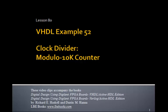This is Lesson 80, VHDL Example 52, and in this example we're going to write a VHDL program for a clock divider. We'll illustrate the use of this clock divider by designing a modulo 10k counter that's going to count on the seven segment displays from 0000 to 9999 and then wrap around.